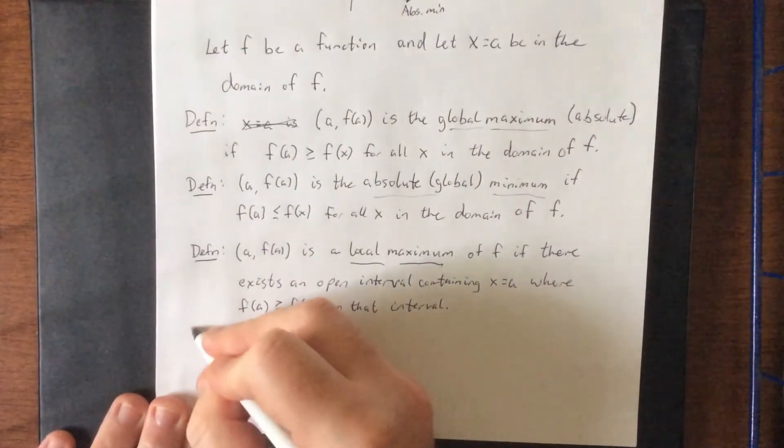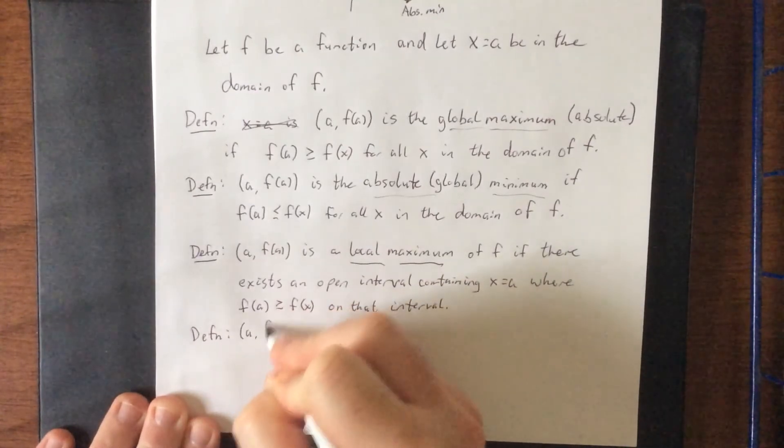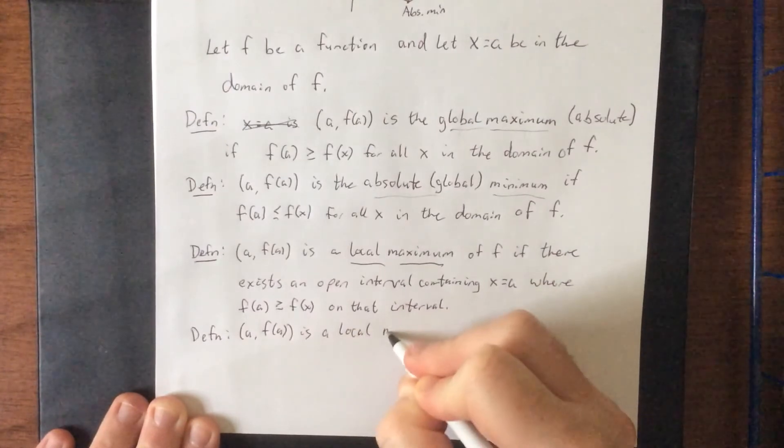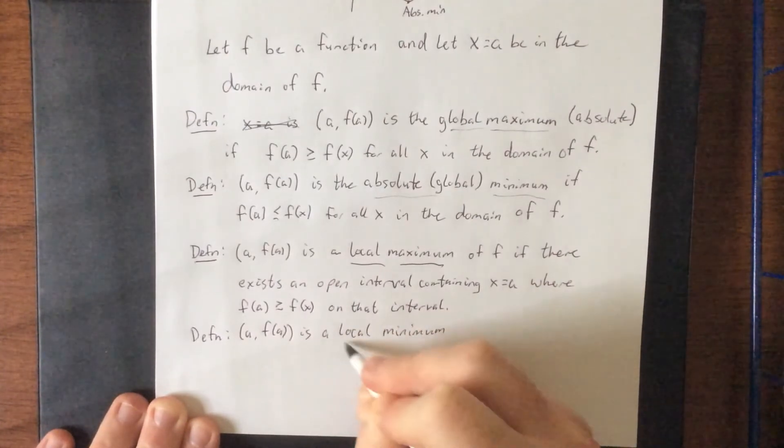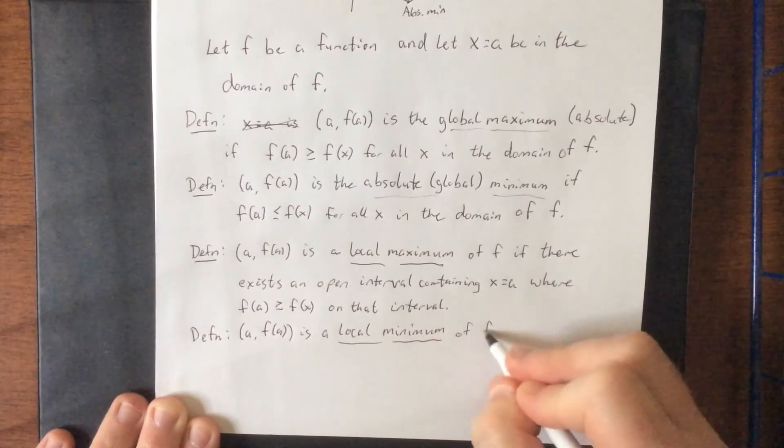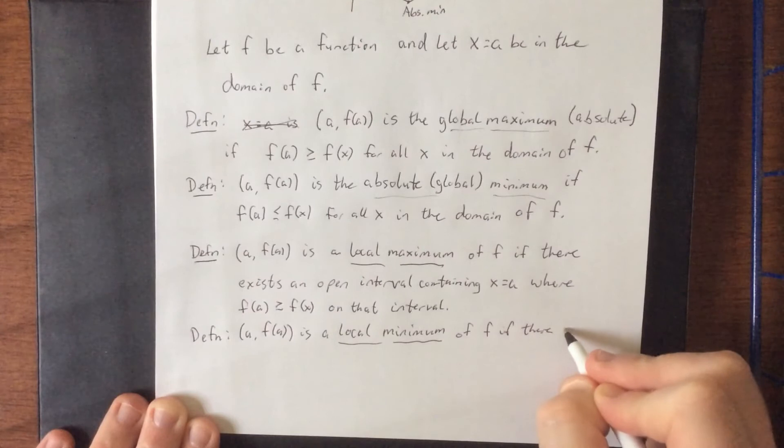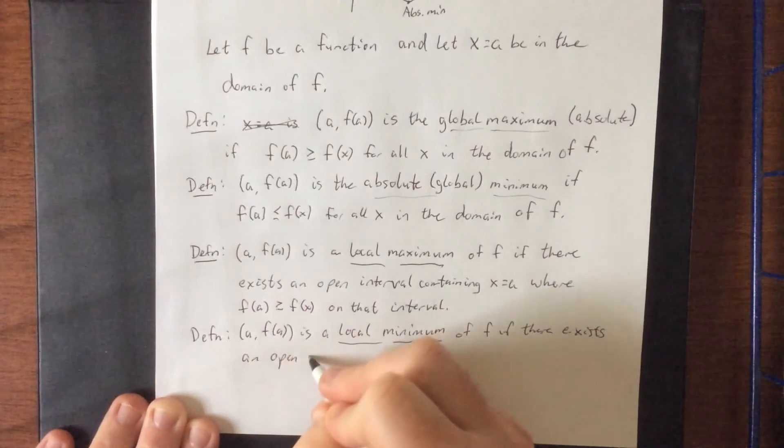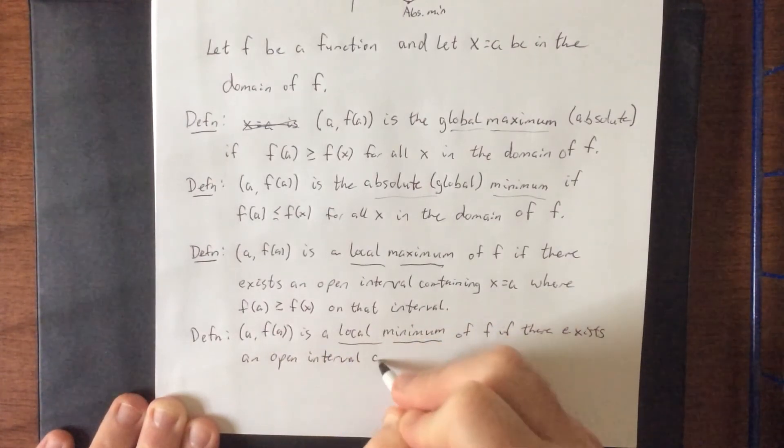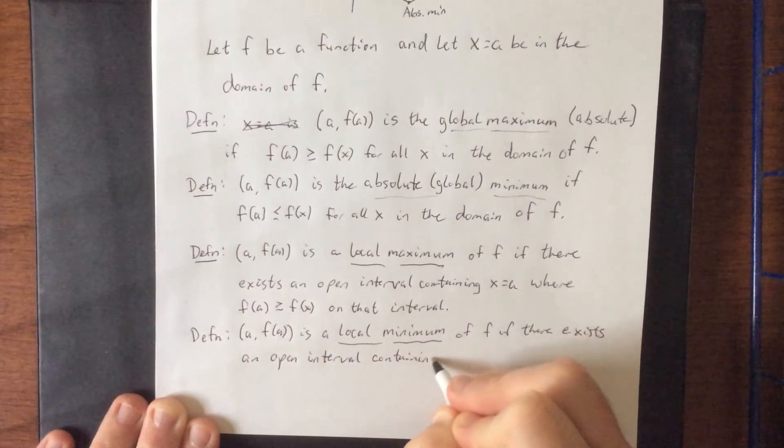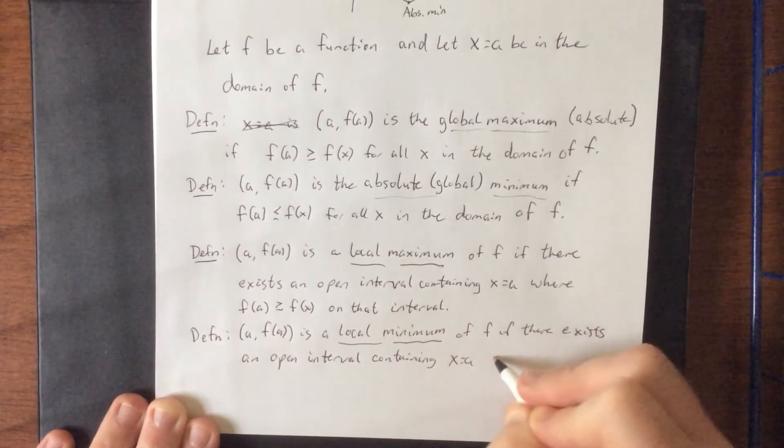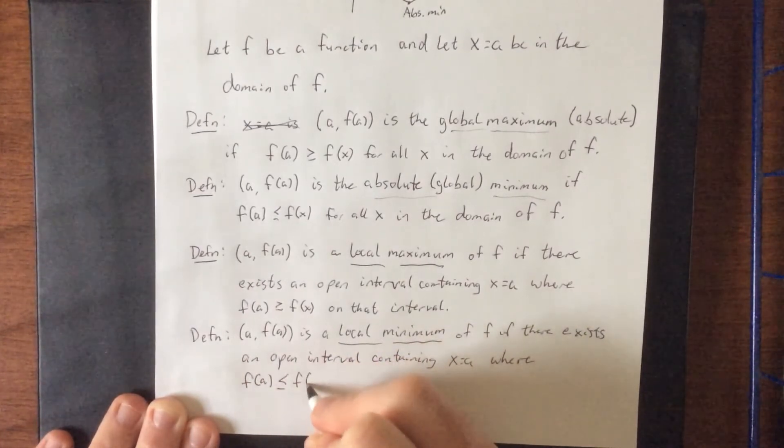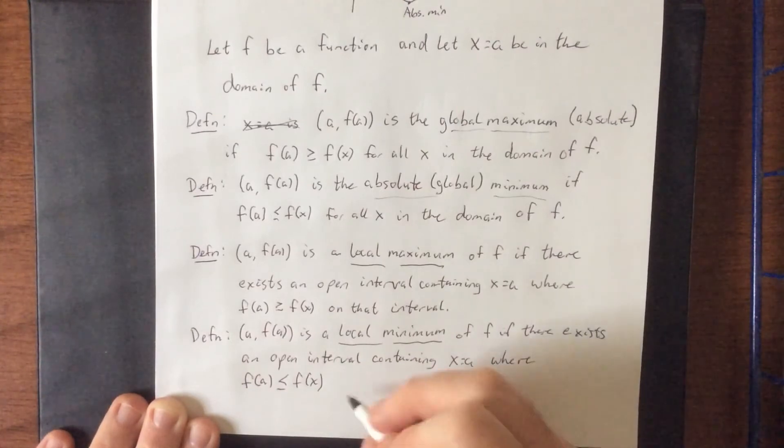And finally, one more definition. Let's say that a comma f of a is a local minimum or relative minimum of f if there exists an open interval containing x equals a where f of a is less than or equal to f of x just on that interval.